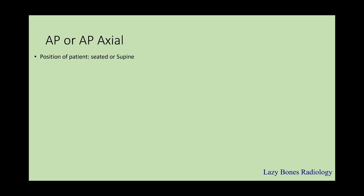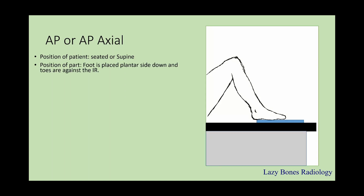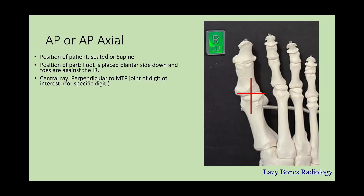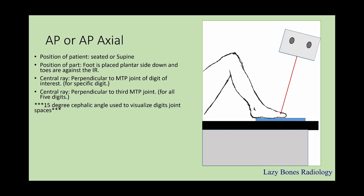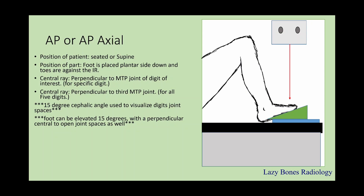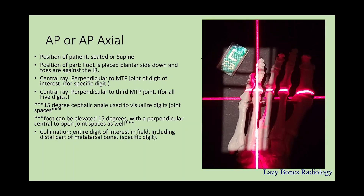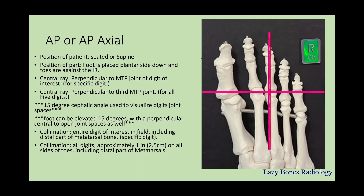AP and AP axial projection. Position of the patient is seated or supine. Position of the part: foot is placed plantar side down, and the toes are against the IR. Centering is perpendicular to the MTP joint of the digit of interest, or your centering can be perpendicular to the third MTP joint if you want to see all the digits at the same time. A 15-degree cephalic angle can be used to visualize the digit's joint spaces. The foot can also be elevated 15 degrees with a perpendicular centering to open up the joint spaces as well. Make sure to collimate the entire digit of interest in the field, including the distal part of the metatarsal bone for the specific digit, or you can collimate all the digits approximately one inch around all the sides of the toes, including the distal part of the metatarsals, if you want to see all the digits at once. This depends on the doctor and also the protocol in your clinical setting. SID is 40 inches, and remember to label correctly.